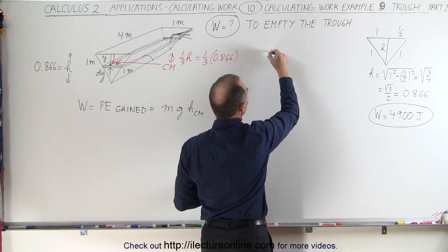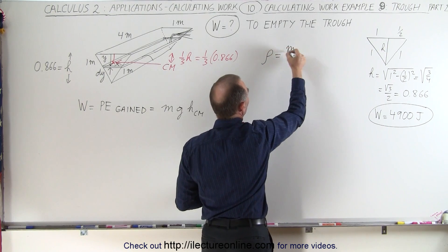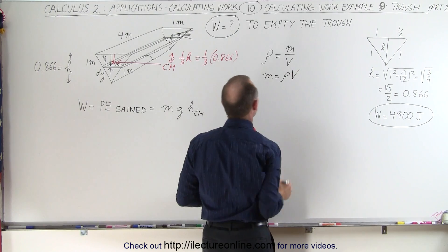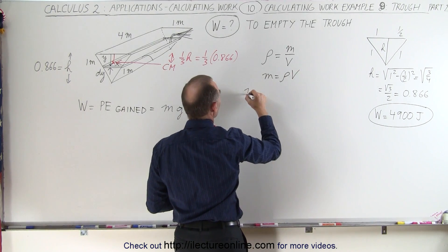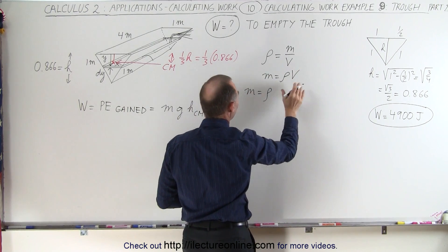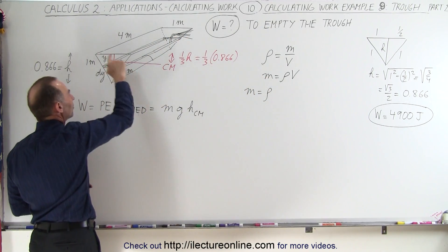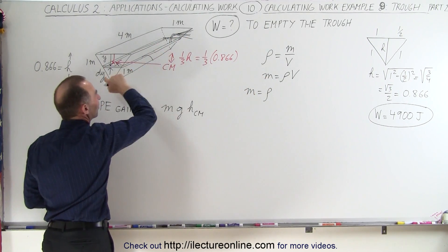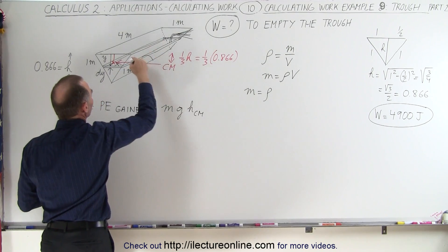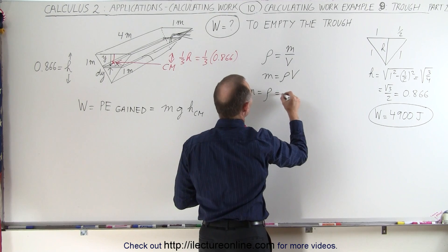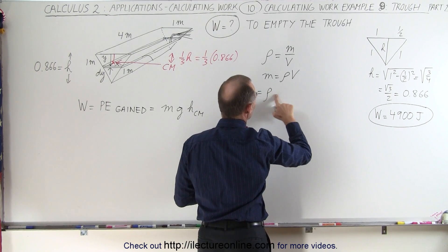We know that density is equal to the ratio of the mass to the volume, so therefore the mass is equal to the density times the volume. And in this case, the mass will be equal to the density times the volume of this trough will be the area of the base times the length.